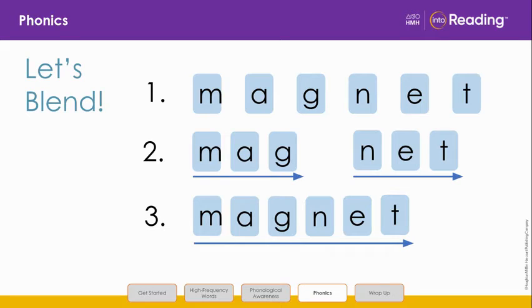Remember that sometimes the vowel sound in the second syllable is neither short nor long. Instead, it is the schwa sound. So instead of m-a-g-net, we should say m-a-g-net. Blend and say the word with me. M-a-g-net, magnet. Good job!